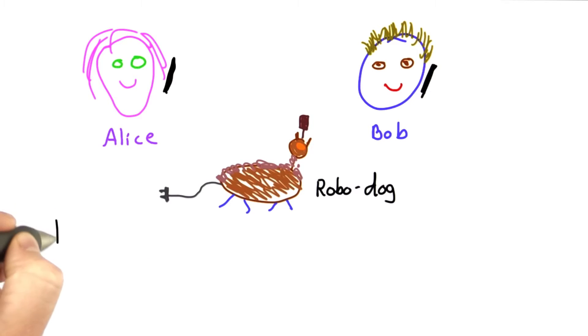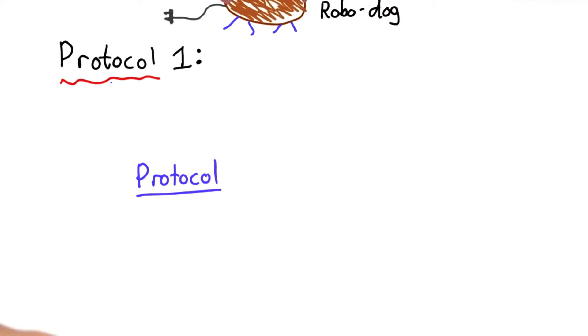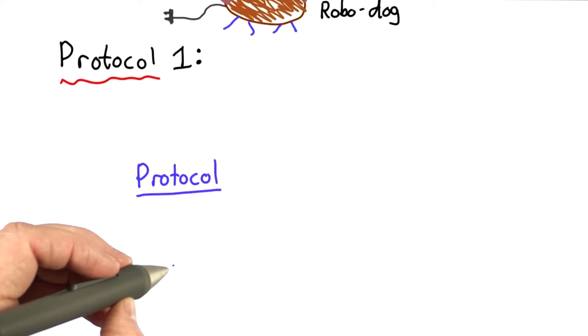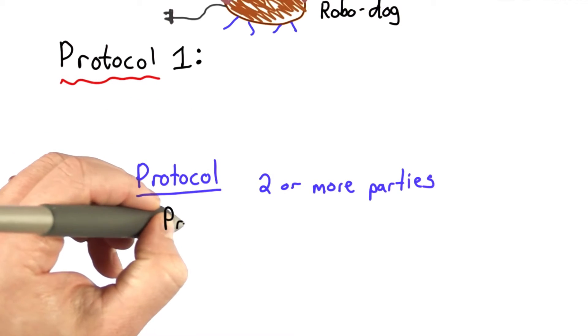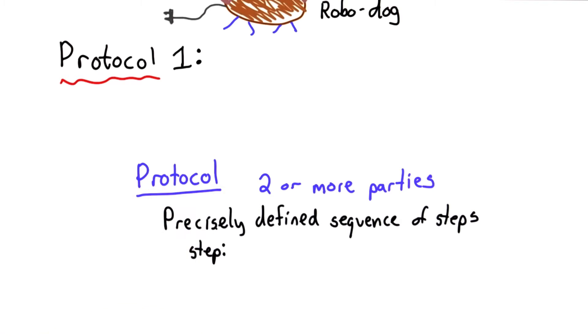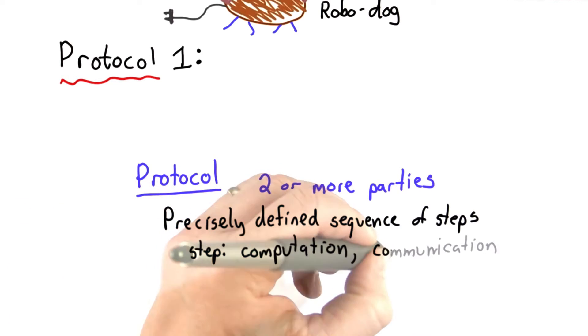So this is the first protocol they try. So before describing the protocol, I want to define more carefully what I mean by a protocol. We've actually seen a few already, but I haven't defined what a protocol means. And a protocol involves two or more parties. And what it is, it's a precisely defined sequence of steps. And what each step can involve is some computation as well as communication. And communication can involve sending data between the parties in the protocol.